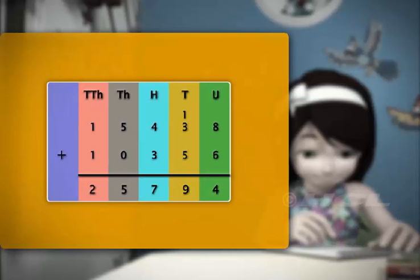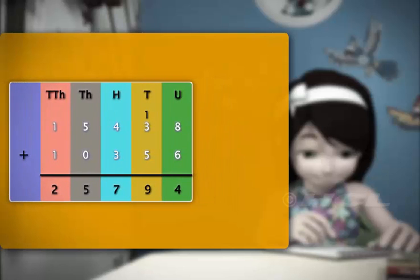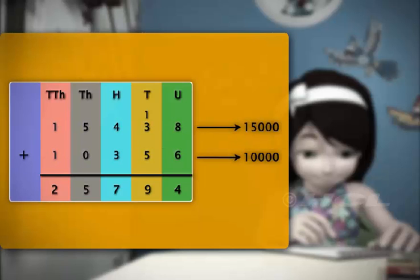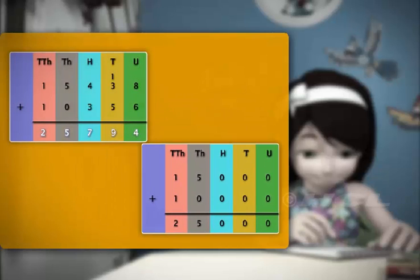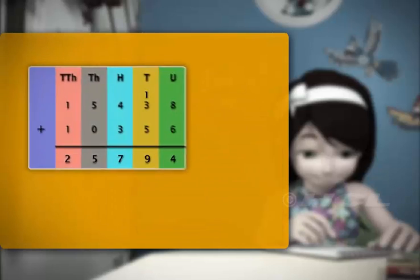We can check the answer of our addition by using estimation. To get the estimated values, we round off 15,438 and 10,356 to their nearest numbers. We get 15,000 and 10,000. Adding the two numbers, we get the estimated answer as 25,000. Since this estimated value is close to the actual answer, which is 25,794, our addition is correct.